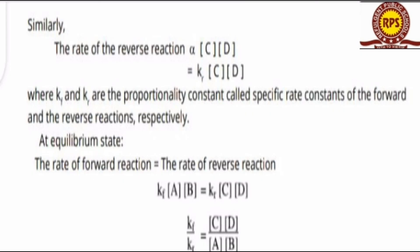Similarly, the rate of reverse reaction — how can we write it? The product was reversed, so the products came from C and D. We write C and D in brackets. The rate of reverse reaction is directly proportional to the product of concentrations of C and D, multiplied by KR, where KF and KR are the proportionality constants called the specific rate constants of forward and reverse reactions.